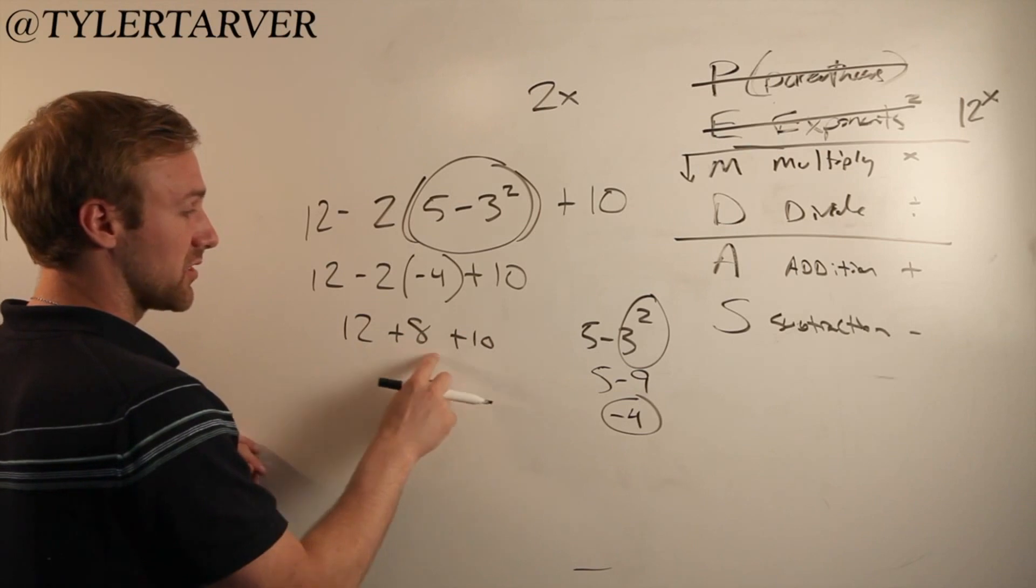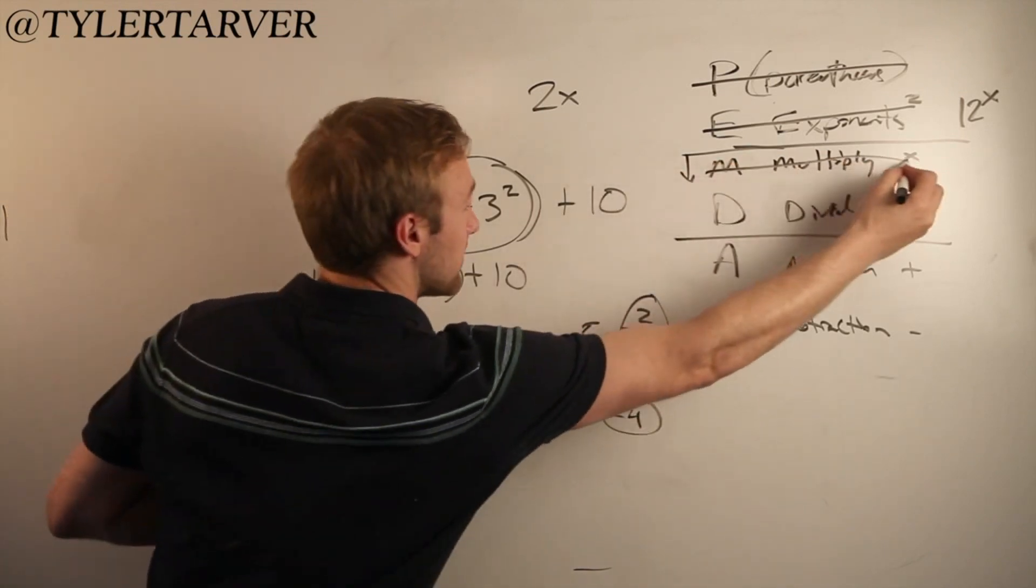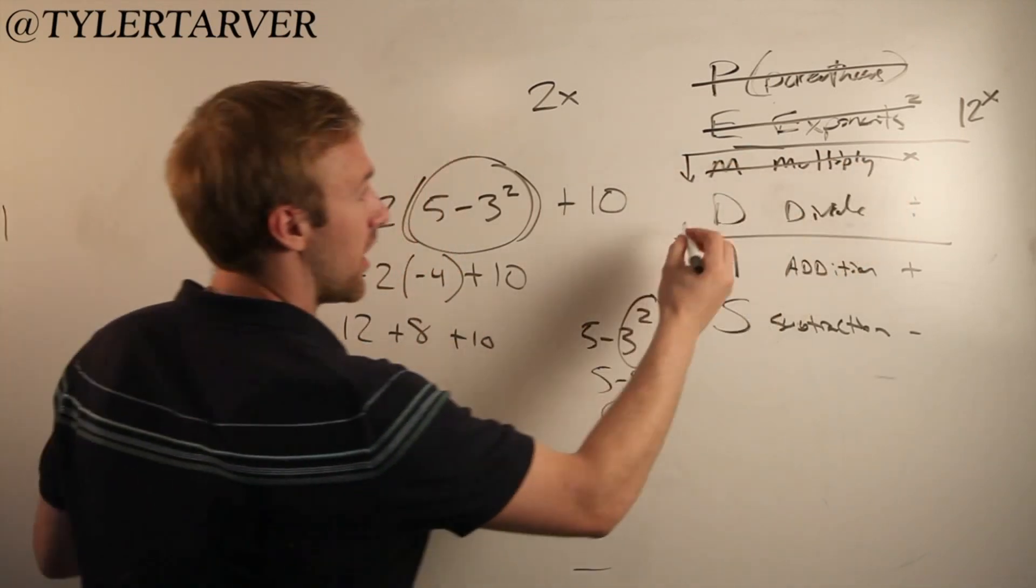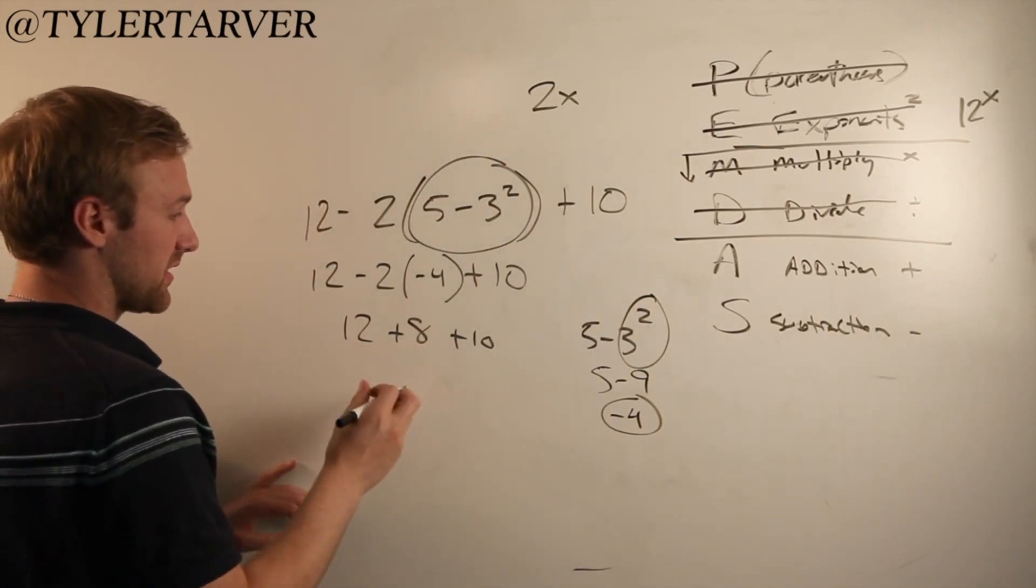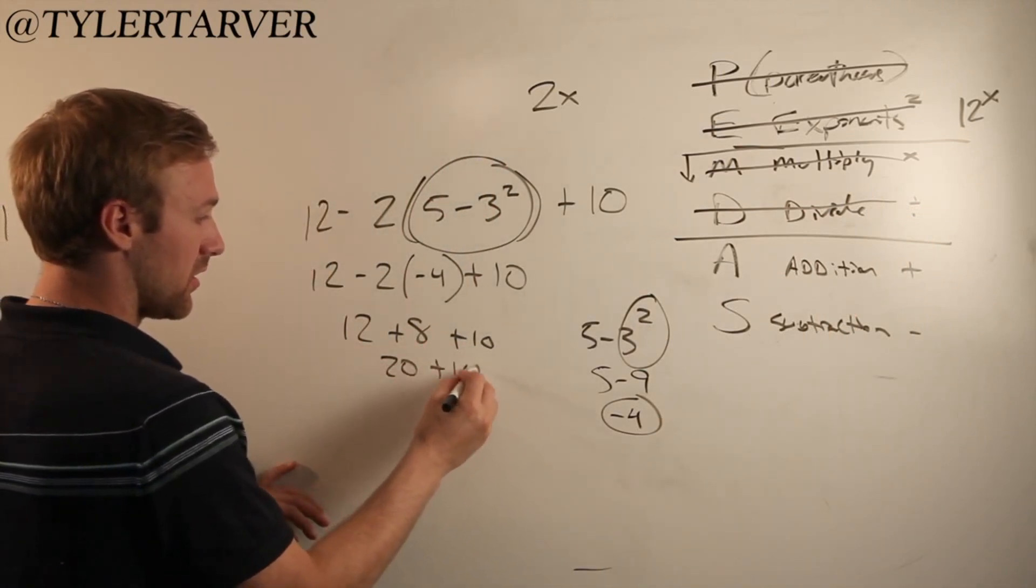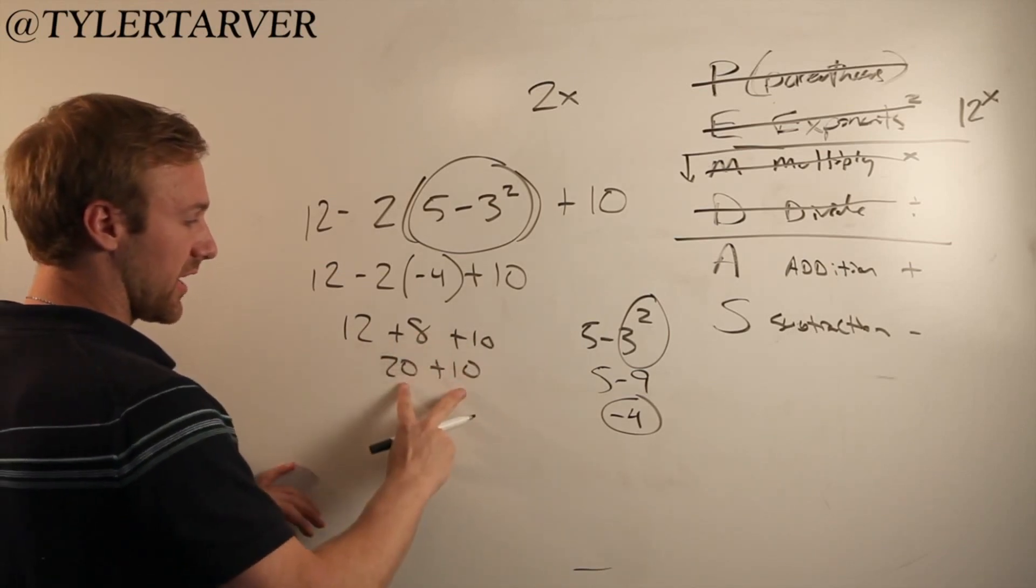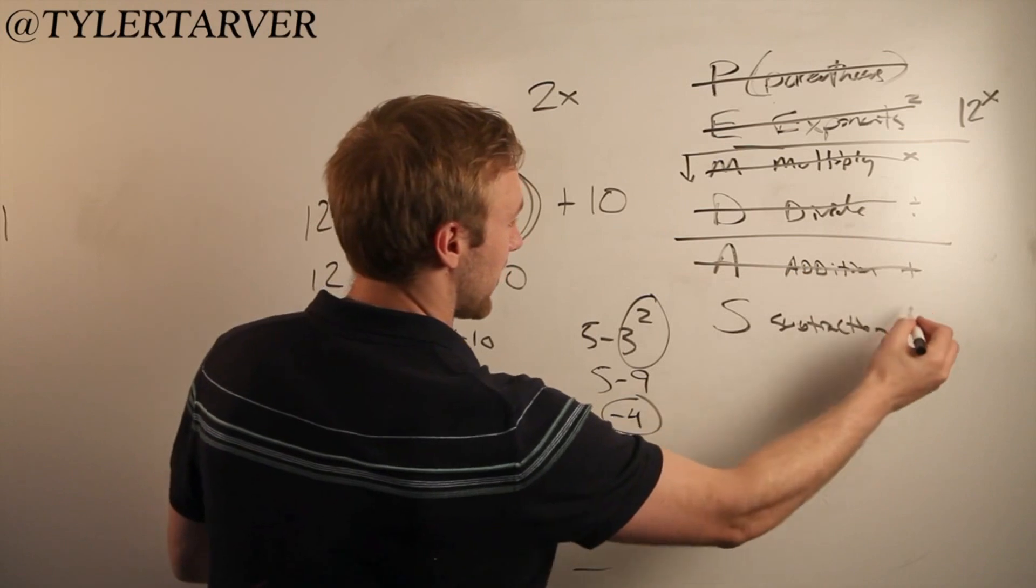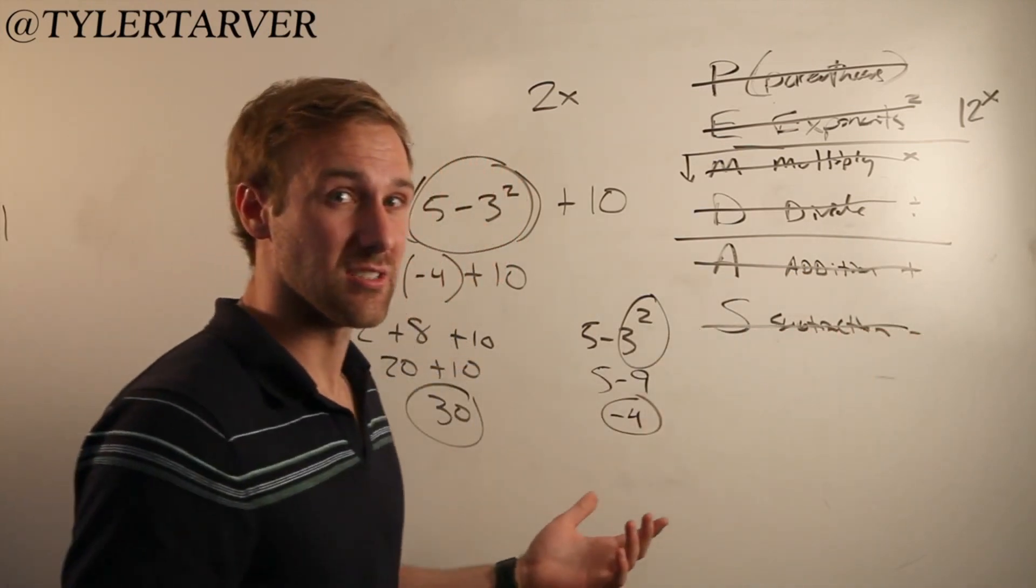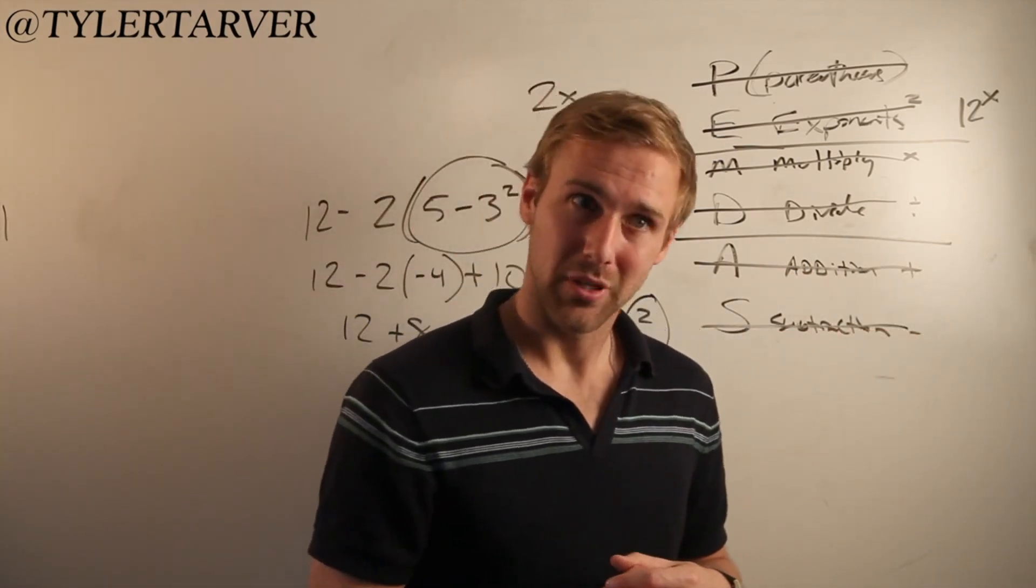Is there anything else to multiply? No. Is there anything else to divide? No. Is there anything to add? Yippers. 12 plus 8 is 20. And then we just keep going from left to right. 20 plus 10 is 30. Is there anything else left? I'm sorry subtraction. You don't get included. And that's the order of operations. Sweet.